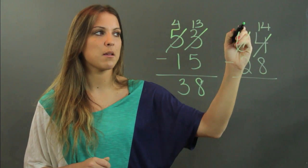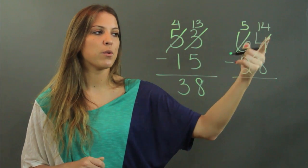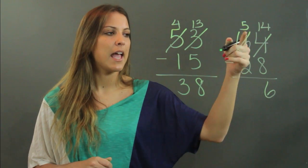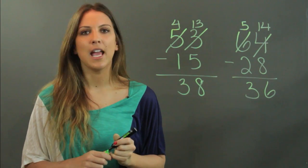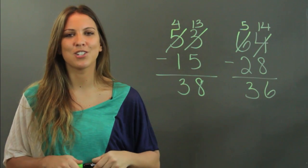Now 14 minus 8 is 6, and 5 minus 2 is 3. So 64 minus 28 is 36. My name is Maria and I just showed you how to borrow from a whole number.